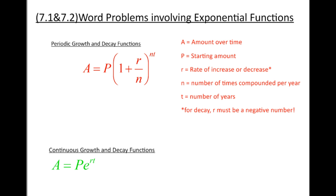The first type of exponential function that we want to take a look at is something called periodic growth and decay functions. Here is the formula that you have to memorize right here. The periodic growth and decay function says if I have A equals P parentheses 1 plus r over n to the nt power, what do all these represent? Well, let's take a look.